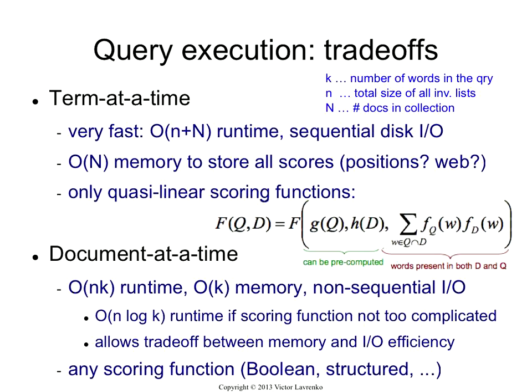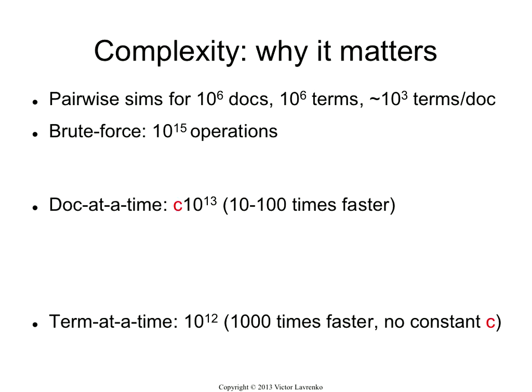Another advantage of document-at-a-time is you can use any scoring function. So if you have a Boolean formula that cannot be decomposed, document-at-a-time can handle it — term-at-a-time cannot. It also works for structured queries. Document-at-a-time also has more optimizations of various kinds that you can perform, and we're going to talk about that next.